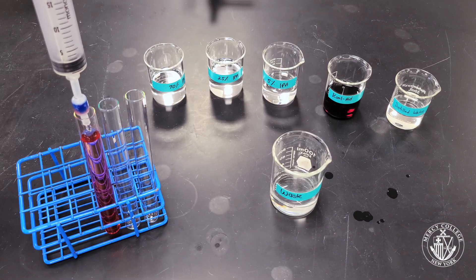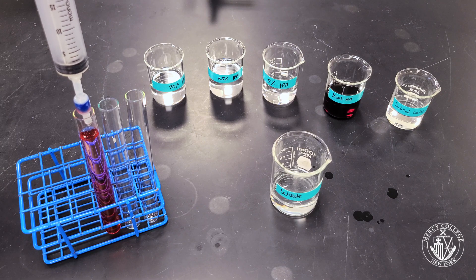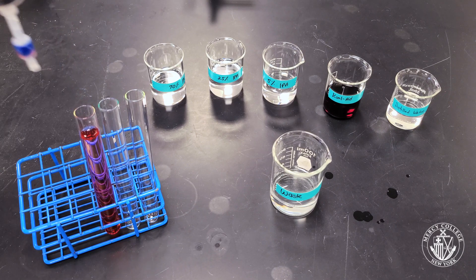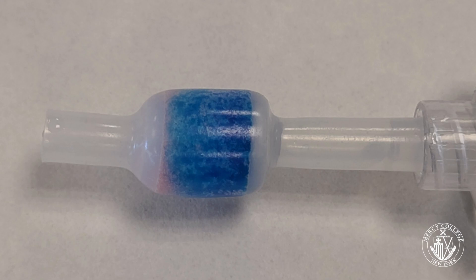Continue to collect the elutant until you've fully removed the red dye from the column. A successful separation will leave only blue dye remaining on the column.